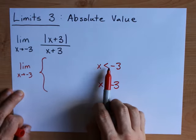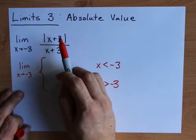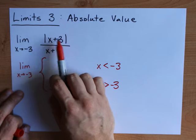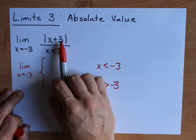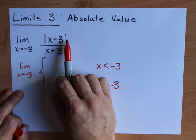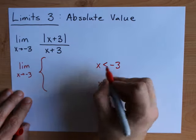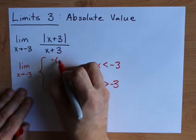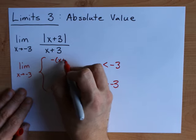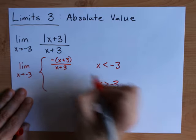When x is less than negative three, that number, negative four, negative five, negative 100, plus three gives me a negative number on the inside of the absolute value bars. The absolute value bars then have the effect of flipping the sign. So when x is less than negative three, those absolute value bars are the equivalent of a negative sign being applied to whatever I got. My denominator is unchanged.